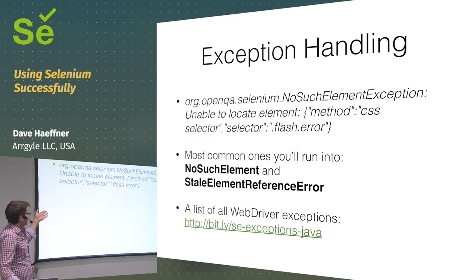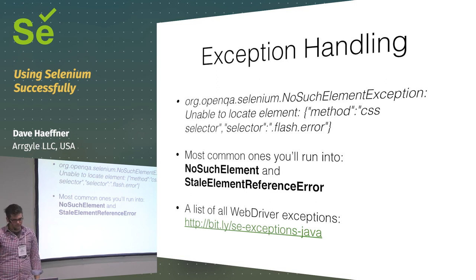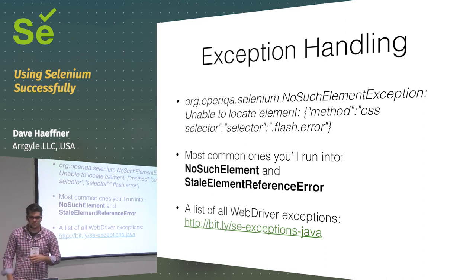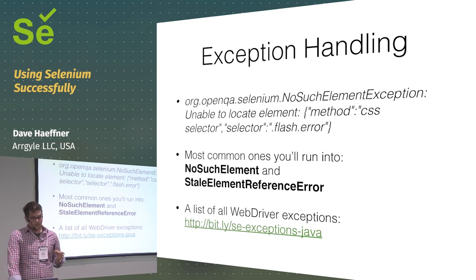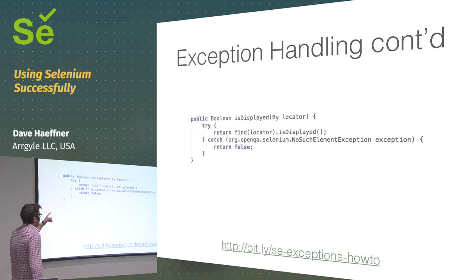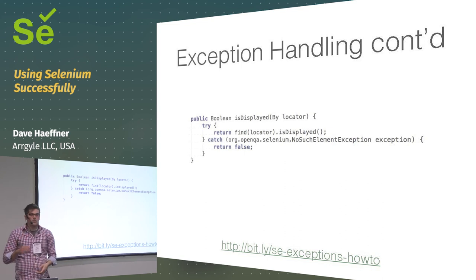A common exception is NoSuchElement, and you could also run into a StaleElementReference error. There's a full list of WebDriver exceptions in the language documentation. If you take an abstract display check, you can wrap it in a try-catch so that if you try to find something that isn't on the page, Selenium throws the exception and instead you return false — so Selenium just gives you a boolean response telling you whether something is displayed on the page.